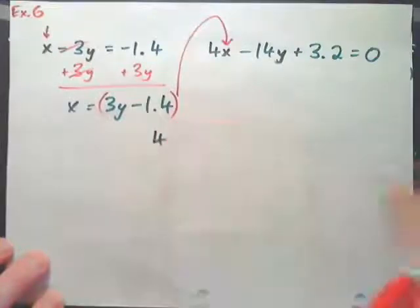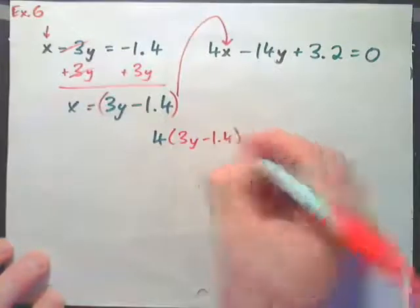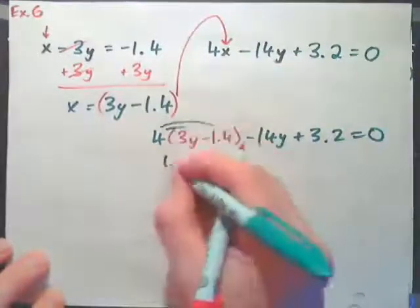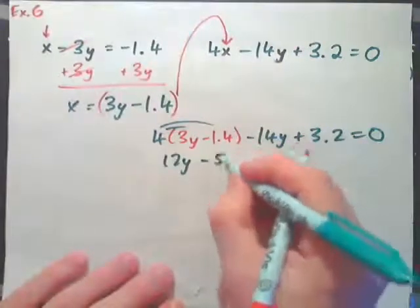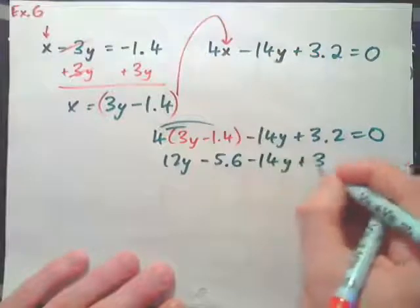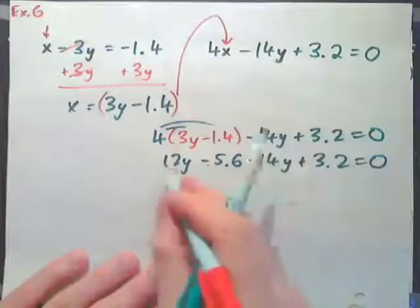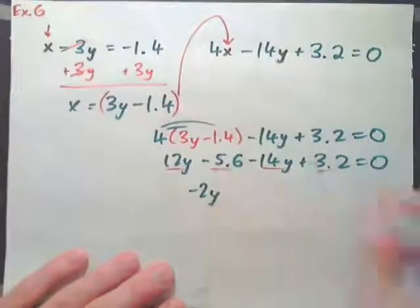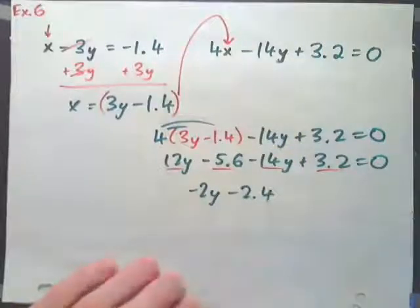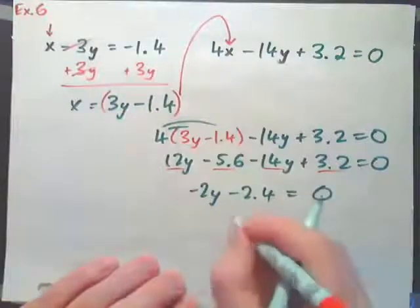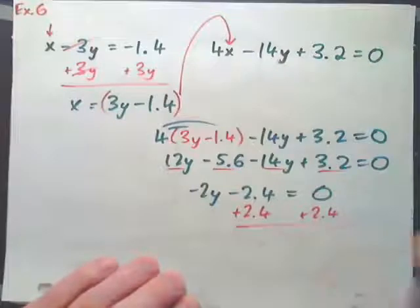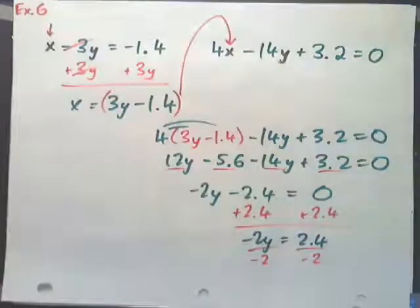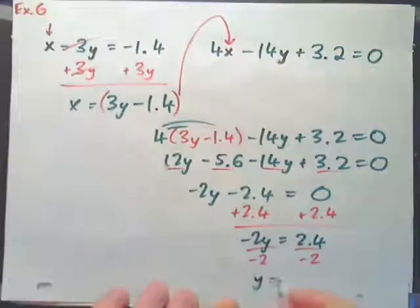After substituting, the equation becomes 4 times (3y minus 1.4) minus 14y plus 3.2 equals zero. Expanding: 12y minus 5.6 minus 14y plus 3.2 equals zero. Combining like terms: negative 2y minus 2.4 equals zero. Add 2.4 to both sides: negative 2y equals 2.4. Divide by negative 2: y equals negative 1.2.